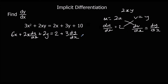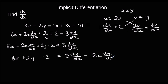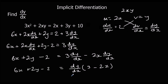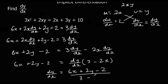We rearrange to make dy/dx the subject. Taking 2 off both sides gives 6x plus 2x dy/dx plus 2y minus 2 equals 3 dy/dx. Taking 2x dy/dx off both sides gives 6x plus 2y minus 2 equals 3 dy/dx minus 2x dy/dx. Factorising out dy/dx gives dy/dx times (3 minus 2x). Dividing both sides by (3 minus 2x), dy/dx equals (6x plus 2y minus 2) over (3 minus 2x).